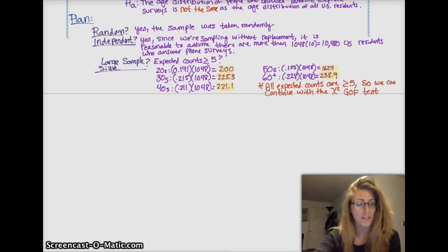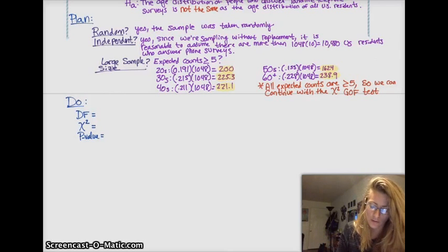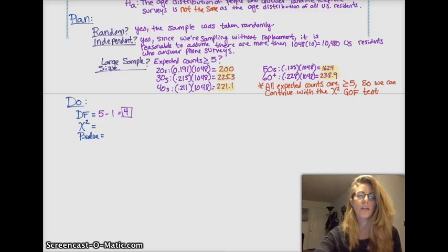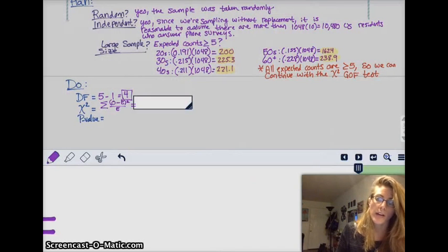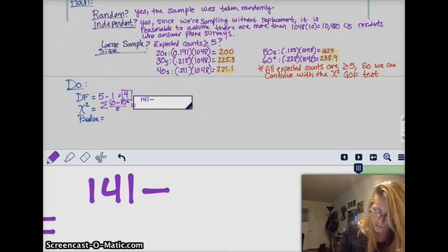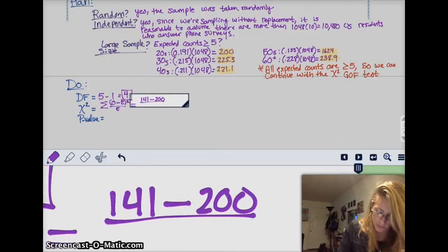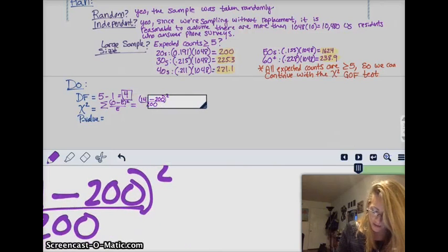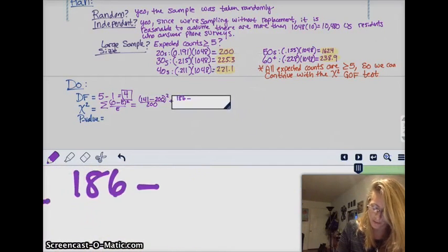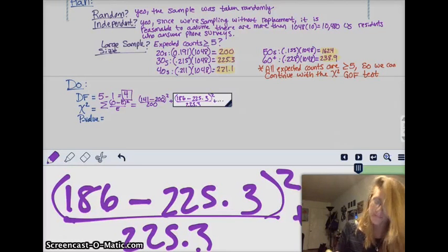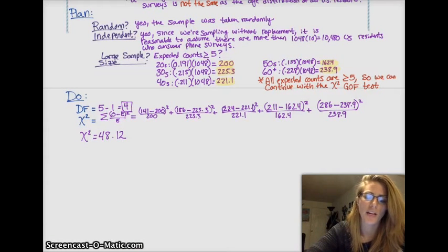Now we do the calculations. Degrees of freedom is number of categories minus 1 — we have 5 categories, so degrees of freedom is 4. Our chi-squared value is the sum of (observed minus expected) squared divided by expected. For the 20-year-olds, observed is 141 minus expected 200, squared, divided by 200. For the 30s, it's 186 minus expected 225.3, squared, divided by 225.3. We keep going for all categories. The result is chi-squared equals 48.12.